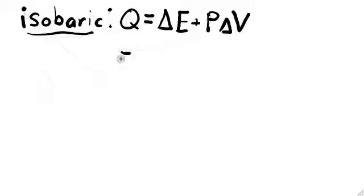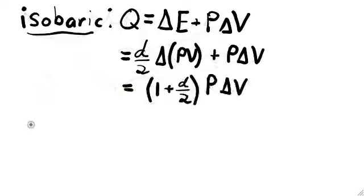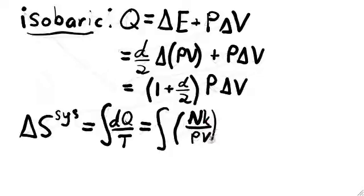The isobaric case is very similar. We start with the first law of thermodynamics, specialized to isobaric processes, and then rewrite everything in terms of the change in volume. This gives us a relationship between an infinitesimal addition of heat, dQ, and an infinitesimal change in volume, namely, dQ is equal to quantity one plus D over two times PdV.